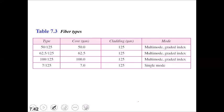Optical fibers are defined by the ratio of the diameter of their core to the diameter of their cladding. The types are defined according to the diameters of the core and cladding, and there are some common sizes that are available.